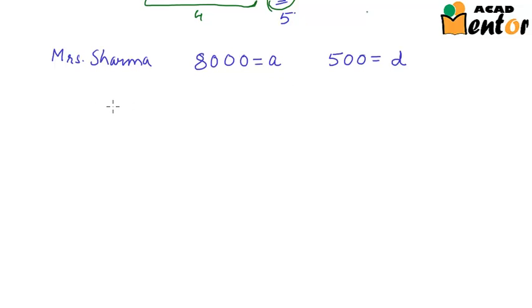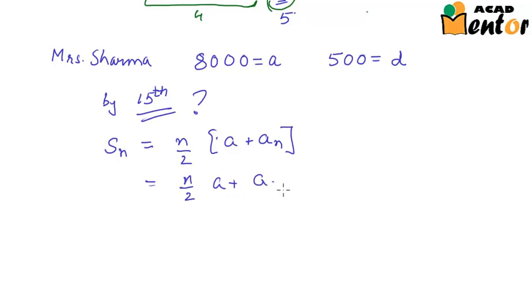Now if we are supposed to find out how much money would she have deposited overall by the end of 15th year, how would you do that? Now it's simple. Since we know the sum of any AP up to n terms is n by 2 into a plus an, that is n by 2 into a plus a plus n minus 1 into d.